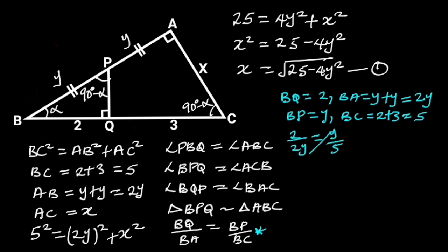By cross multiplication, we will have Y times 2Y is equal to 2 times 5. Y times 2Y is equal to 2Y squared, and 2 times 5 is equal to 10. If we divide through by 2, 2 will cancel out 2. 10 divided by 2 is 5. So we are left with Y squared is equal to 5.